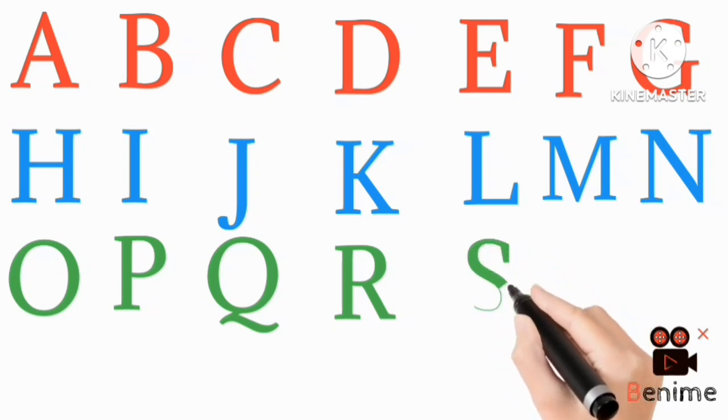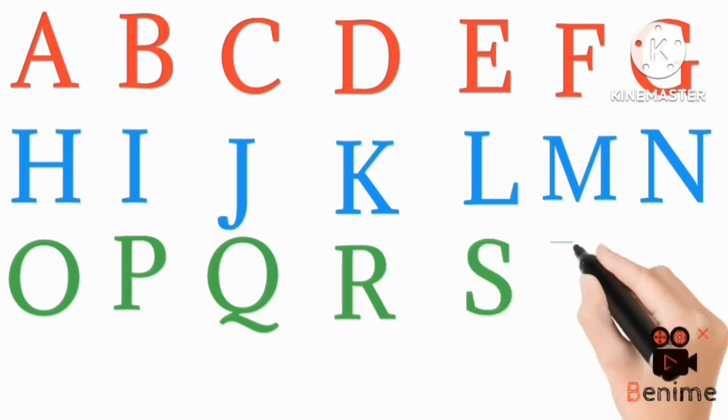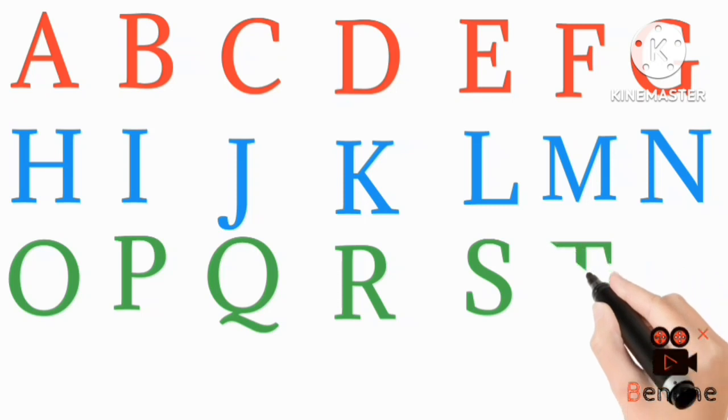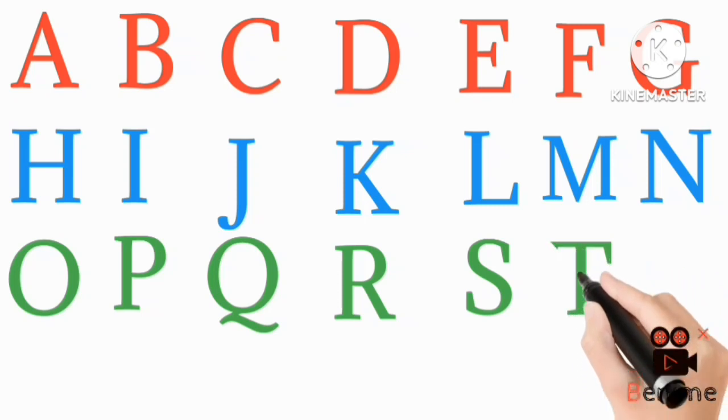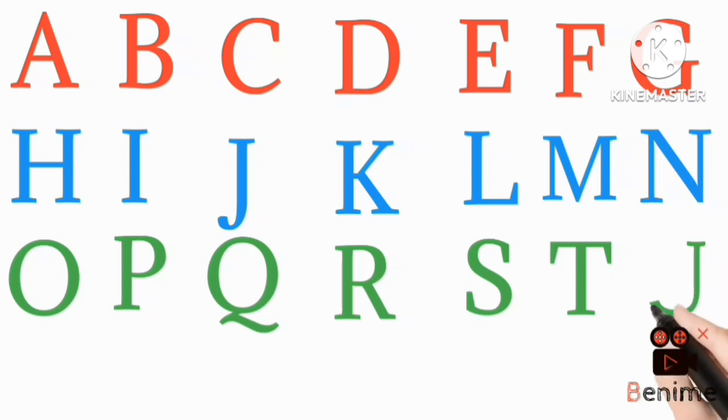Green color S, S for sun. Green color T, T for truck. Green color U, U for umbrella.